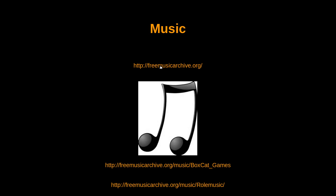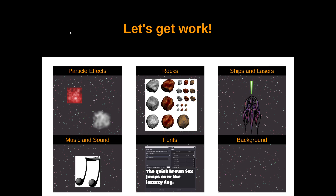For music, you can find free music all over the internet, but one place I like most is freemusicarchive.org. The music I tend to use is by Boxcat Games and Roll Music — they create awesome stuff that's kind of 80s-sounding, like old-style bleep-blip music. If you click the link below and download the zip file, it will include everything: particle effects, rocks, ships, lasers, music, sound effects, fonts, and all three background layers. Download that zip file and I'll see you in the next video where we'll get to work.